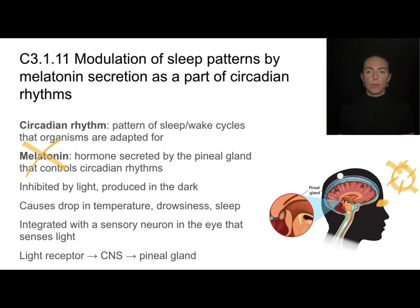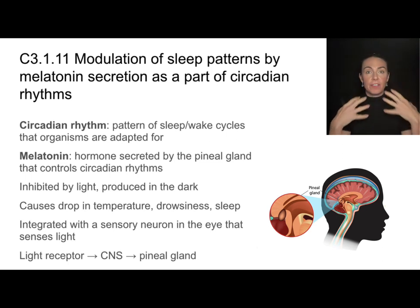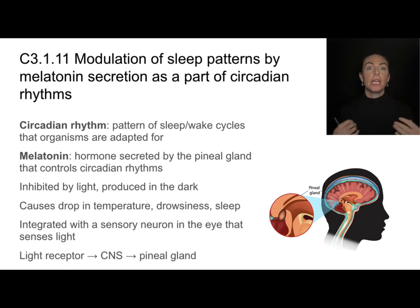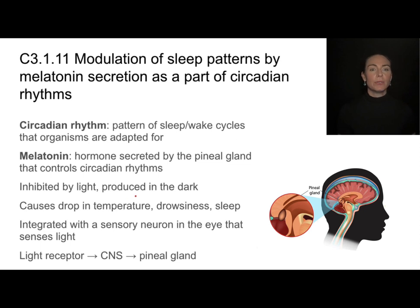When that light is no longer present — for us that might be at nighttime or when we're in a dark room — then that melatonin production is no longer inhibited. The pineal gland will make the melatonin, and because it is a hormone, it will travel through the blood to various parts of our body. Different target tissues with the receptor for that melatonin hormone will pick up on that, and we'll see a variety of effects, including a drop in body temperature, drowsiness, and sleep.